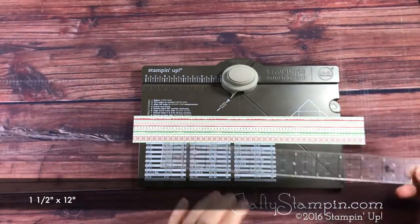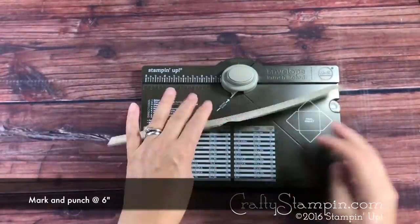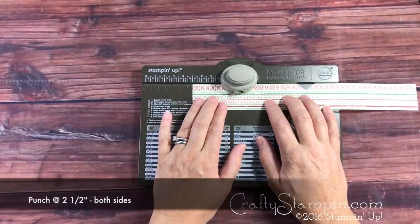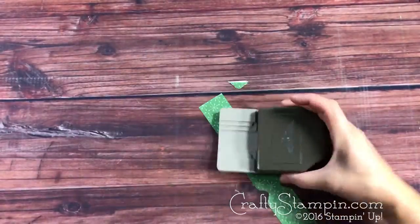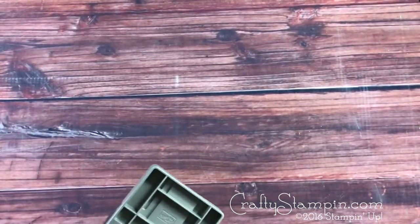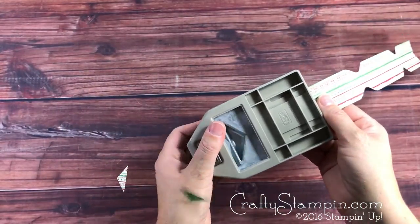We're going to start with our bow. Take a 12 by 1.5 inch piece of DSP and mark it at 6 inches. Punch both the top and the bottom at 6 inches and 2.5 on each end. Then take the triple banner punch and do a banner on both ends.